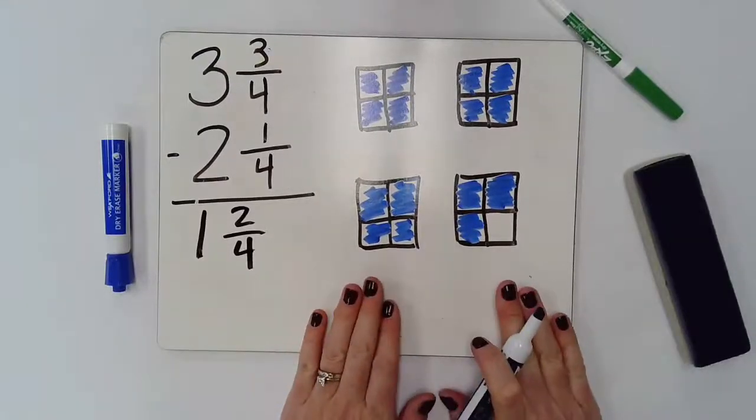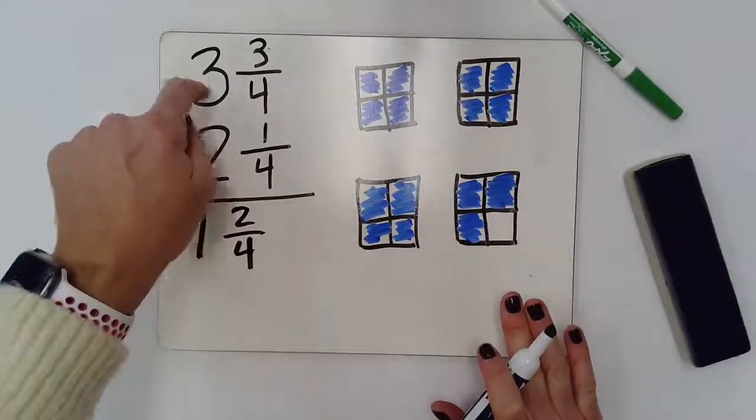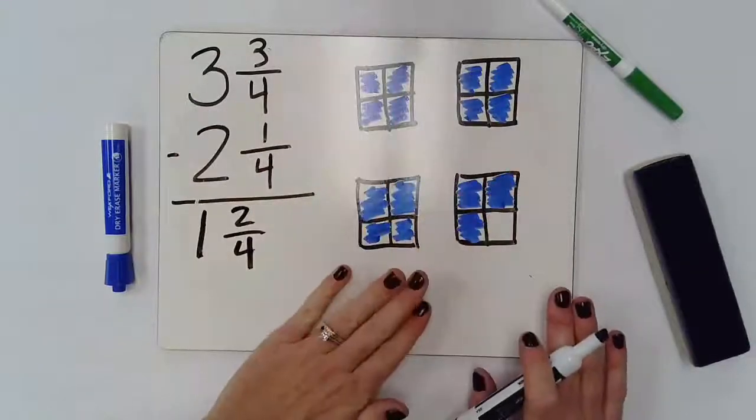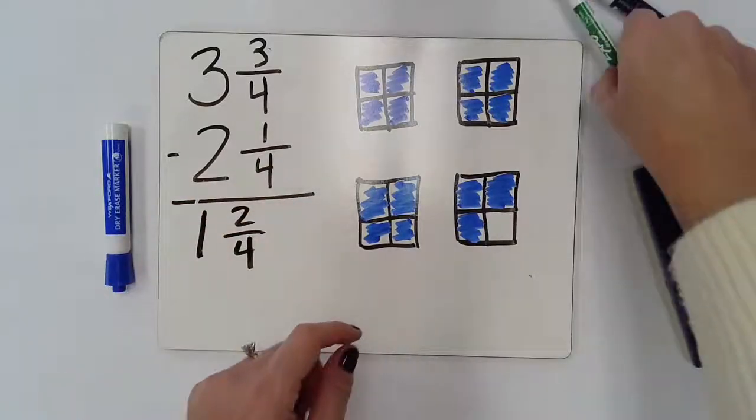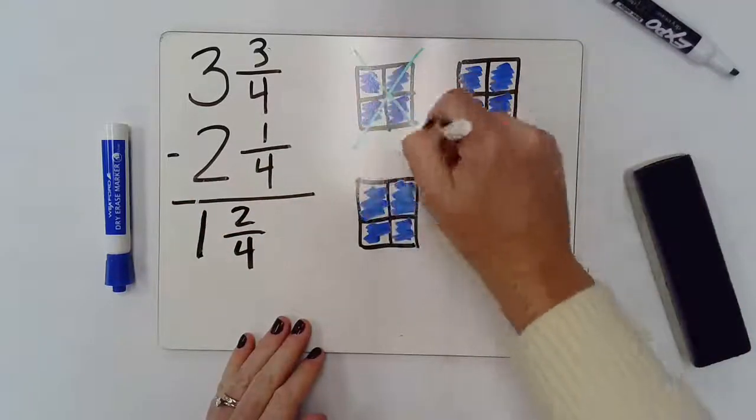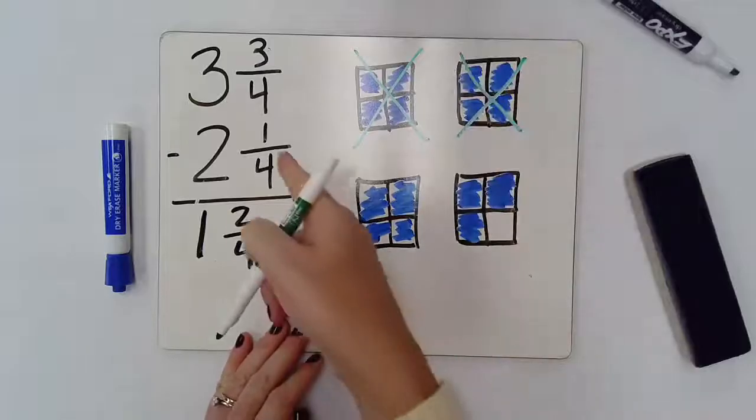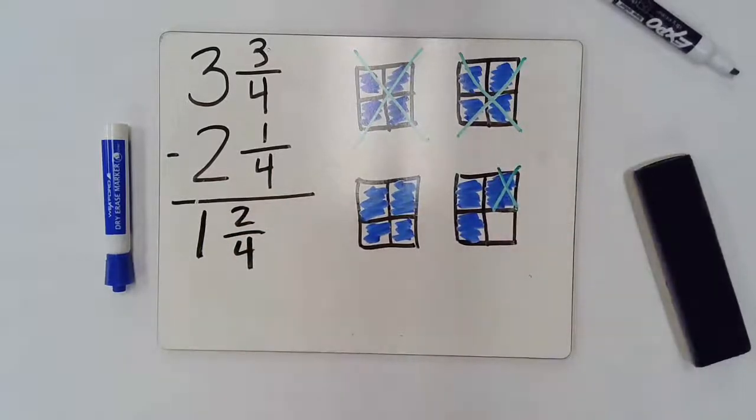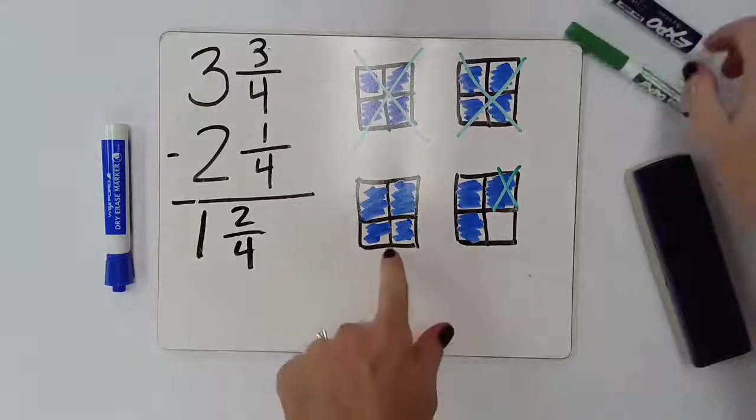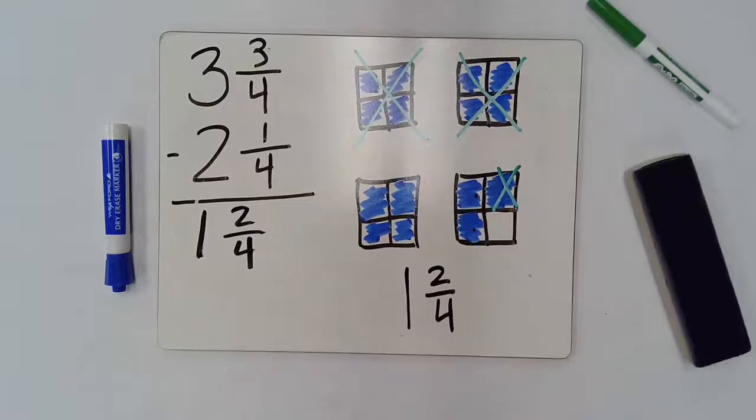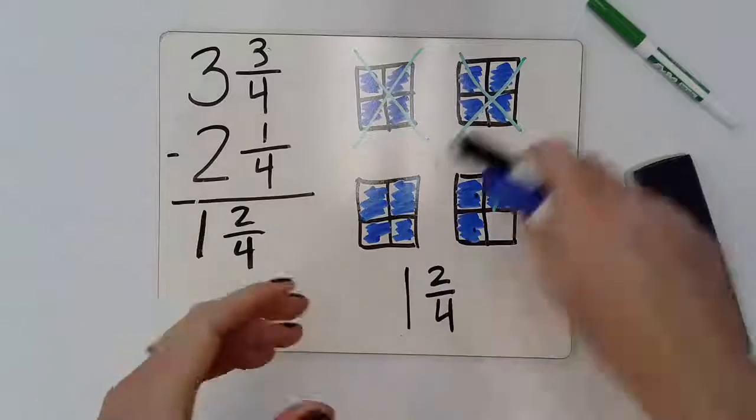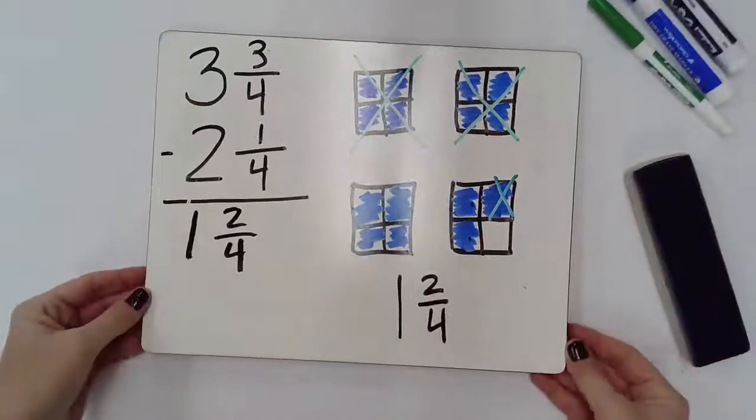So, I'm also going to check my answer by my drawing over here. And you'll notice I already have 3 and 3 fourths drawn out. And so, I'm just going to x out 2 and 1 fourth. So, I'm going to x out 2 wholes and then I'm going to x out 1 fourth. And let's see how much we have left over. So, I have 1 hole left over and then I have 2 fourths. So, drawing it out sometimes can help you see what you're doing as you're subtracting these mixed numbers.